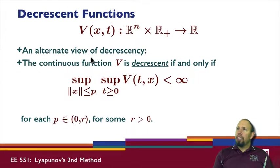An alternate view of decrescency is this: a continuous function V is decrescent if and only if the supremum over all norms less than or equal to some value p, of the supremum of V of x and t for all t greater than or equal to zero, if this quantity is finite, for each p within some non-zero interval near the origin.